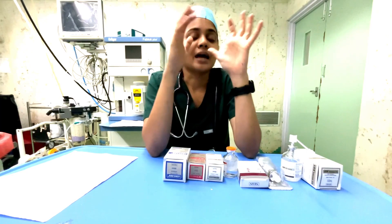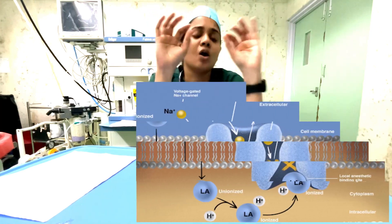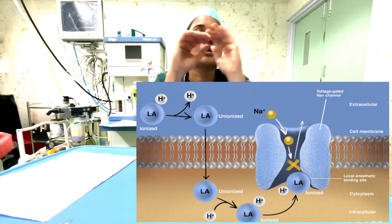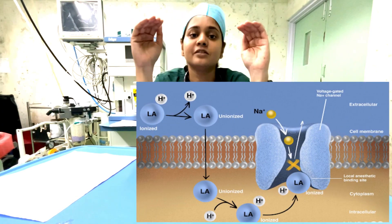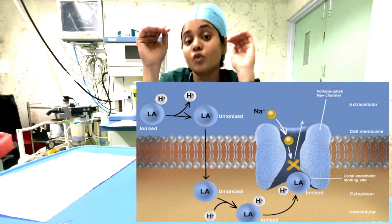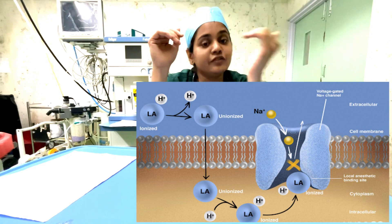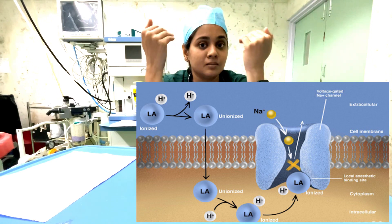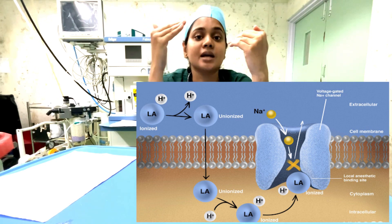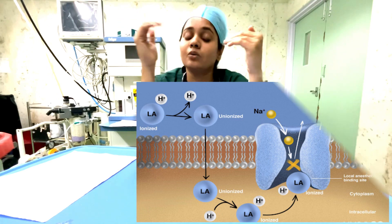Coming to its mechanism of action, broadly all local anesthetics function in a similar way. They block the voltage-gated sodium channels. Hence, the influx of sodium is prevented, thus causing a blockade of nerve impulses, which occurs at the cardiac, neuronal, and also central nervous system level. Thus, there is complete conduction block.